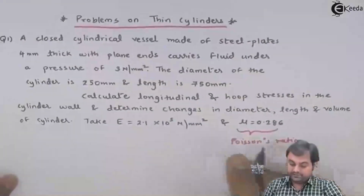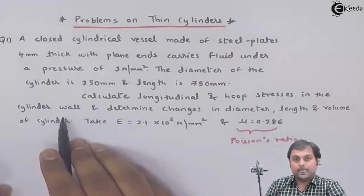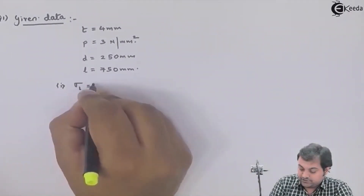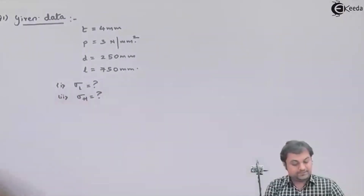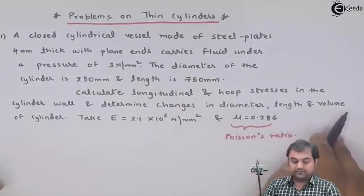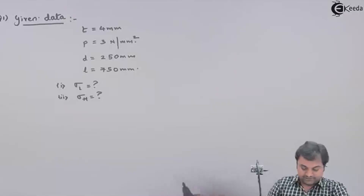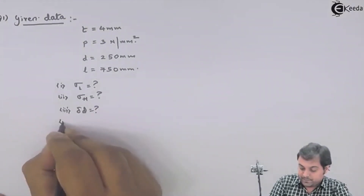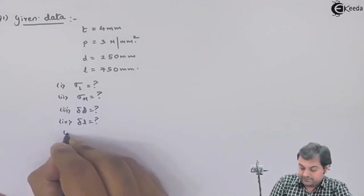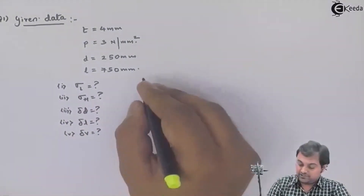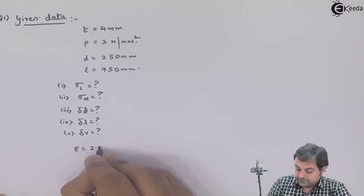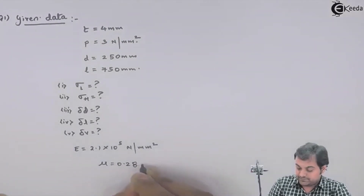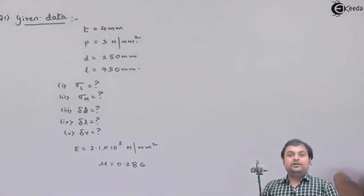The question asks us to calculate longitudinal and hoop stresses, determine changes in diameter, length, and volume of the cylinder. Young's modulus is 2.1 × 10⁵ Newton per mm squared and Poisson's ratio mu is 0.286. With these data available, let us get the solution for this problem.